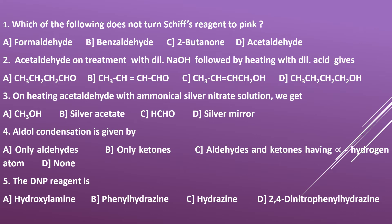Fifth question: the DNP reagent is — options: A) hydroxylamine, B) phenylhydrazine, C) hydrazine, D) 2,4-dinitrophenylhydrazine. DNP is 2,4-dinitrophenylhydrazine, so the right answer is option D.